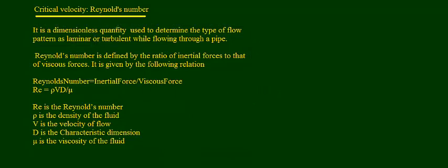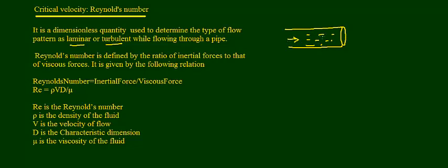Reynolds number is a dimensionless quantity — it does not have a unit — used to determine the type of flow: laminar or turbulent. Let's say we have a pipe of circular cross-section with a fluid flowing in it; whether this fluid is laminar or turbulent we can determine by finding out the Reynolds number.